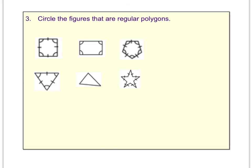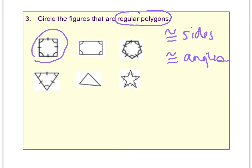Remember from the intro video that regular polygons must have all congruent sides and all congruent angles. So circling the figures that are regular polygons would be this one. Would not be this rectangle because even though the angles are all congruent, the sides are not.